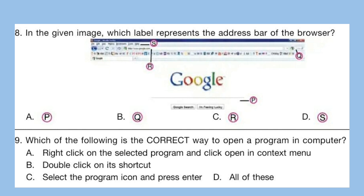Question 9: Which of the following is the correct way to open a program in a computer? A. Right click on the selected program and click open in context menu. B. Double click on its shortcut. C. Select the program icon and press Enter. D. All of these. The correct answer is option D — all of these.